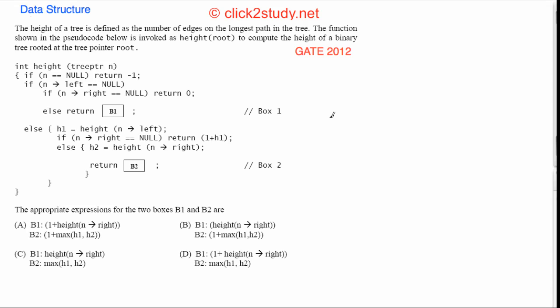The height of a tree is defined as the number of edges on the longest path in the tree. The function shown in the pseudocode is invoked as height(root) to compute the height of a binary tree rooted at the tree pointer root. The height of a binary tree is the longest path from root to any leaf.